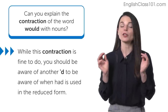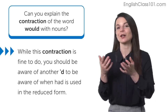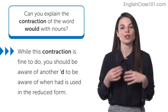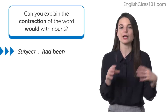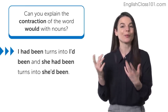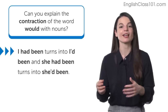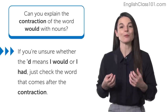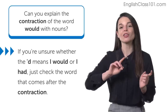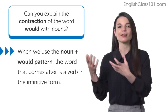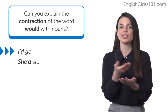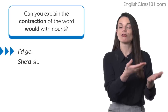Keep in mind that although it's very natural to use noun plus 'would' as noun-apostrophe-d, there's another apostrophe-d to be careful of — when 'had' is used in the reduced form. We see this in patterns like 'I had been' or 'she had been,' where 'had' is reduced to apostrophe-d. This sounds like 'I'd been' or 'she'd been.' A common question is: how do I know the difference? The answer is to look at the word after the contraction. When we use the 'would' pattern, the word that follows is a verb in the infinitive form — like 'I'd go' or 'she'd sit.'